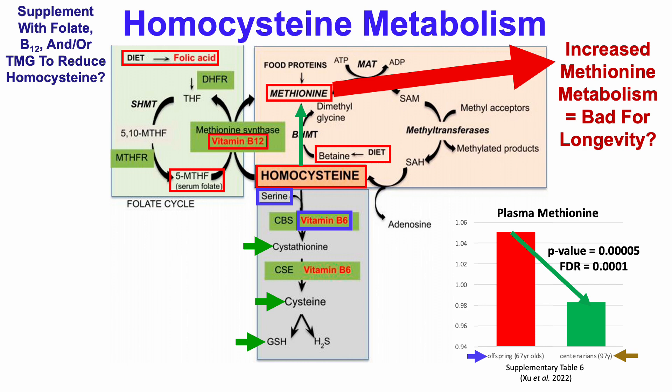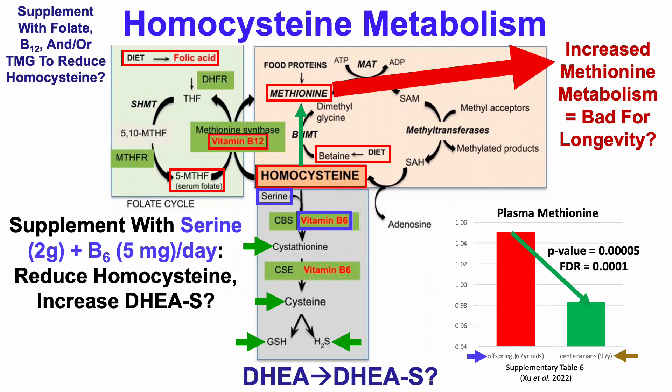Another metabolite making its first appearance on this channel is H2S — hydrogen sulfide. Why that may be important is because hydrogen sulfide may be able to act as a sulfur donor — note the S there. And if it can act as a sulfur donor, I would expect to get an increased conversion of DHEA into DHEA sulfate. And if you're familiar with the channel, you know that my DHEA sulfate levels are not youthful — they're relatively aged.